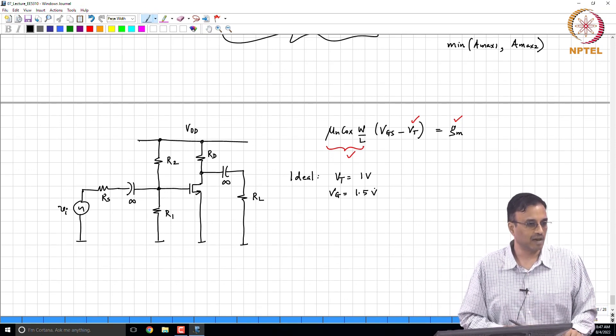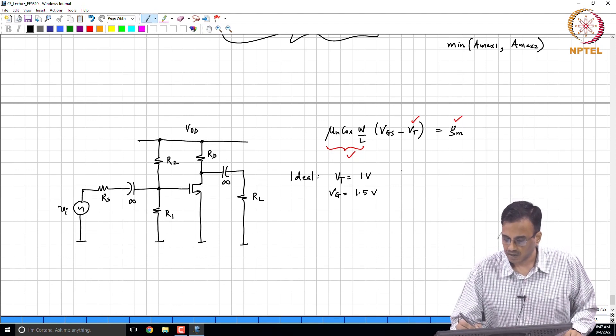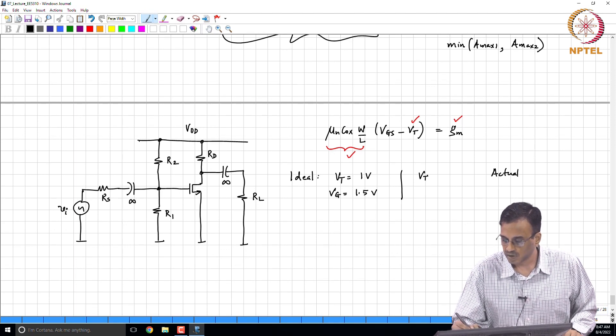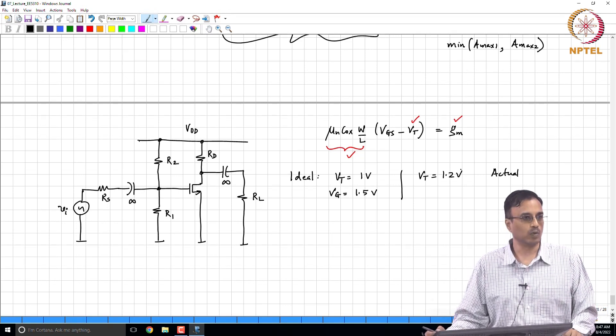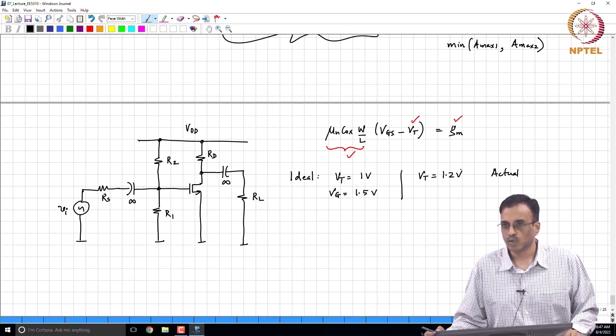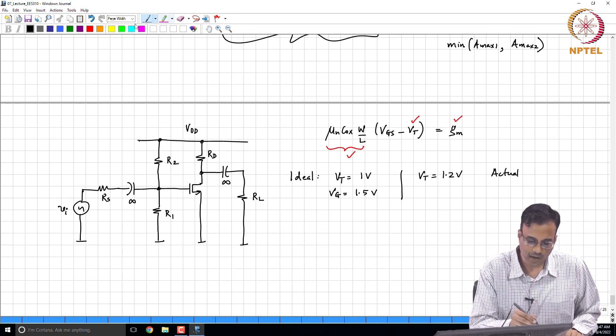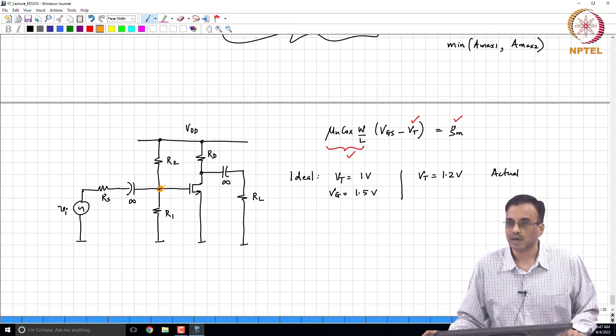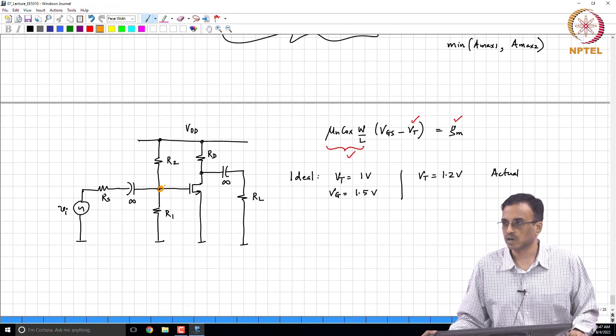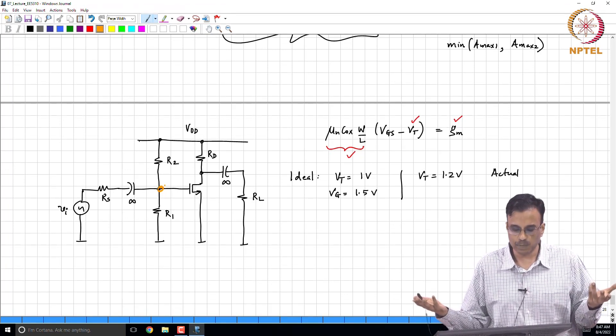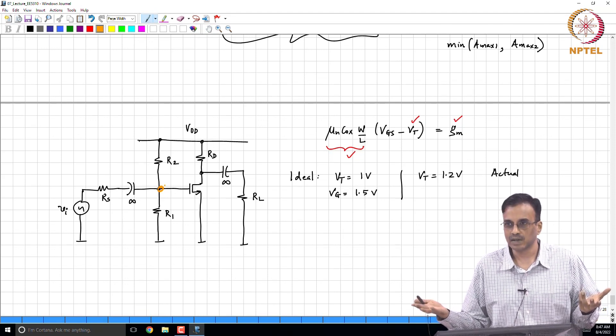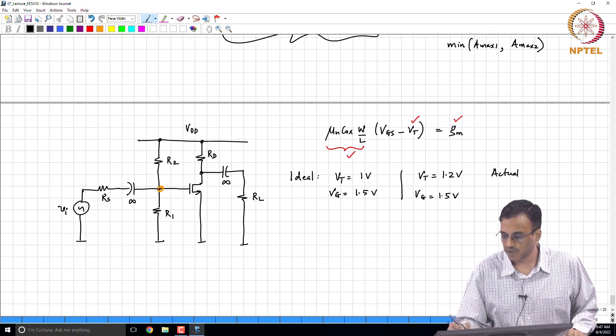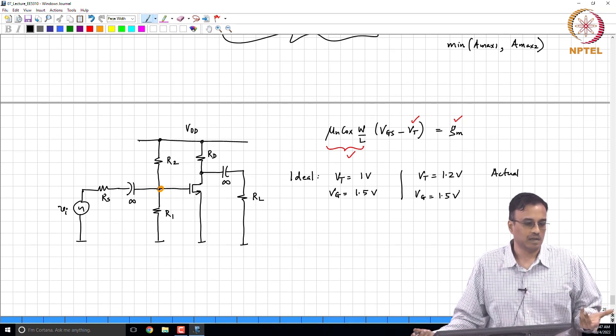Now the transistor comes back from the fabrication foundry. You thought it was - you designed your circuit assuming it was 1 volt, unfortunately it is now 1.2 volts. So what comment can we make about what happens? I have replaced the transistor, what can we say about the gate potential? The gate potential - that potential divider does not know anything about the transistor. The gate potential still remains 1.5 volts.